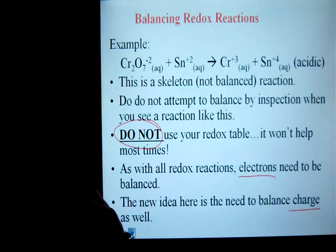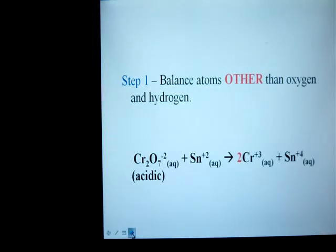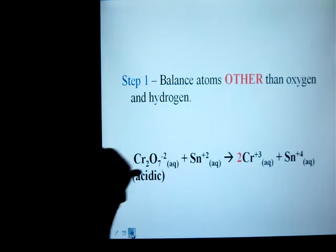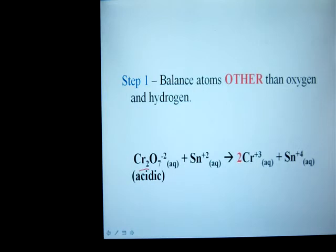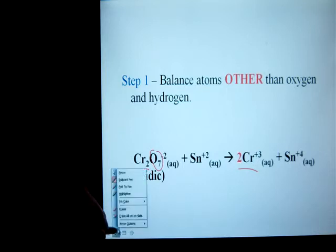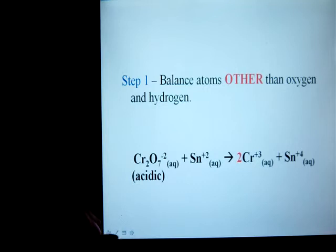So, steps. First thing we're going to do is balance everything that is not oxygen and hydrogen. So that's done here. I had the two CRs in the dichromate, so I put in a 2 over here to balance those. Notice that we have oxygen on the left-hand side, none on the other. We're not going to worry about that yet. We will take care of that.